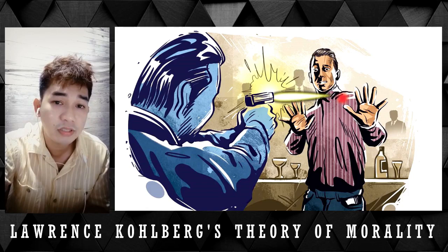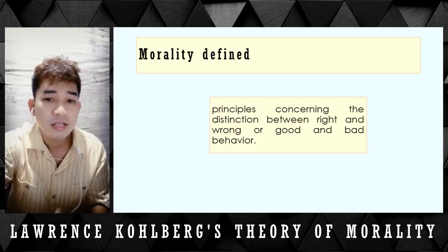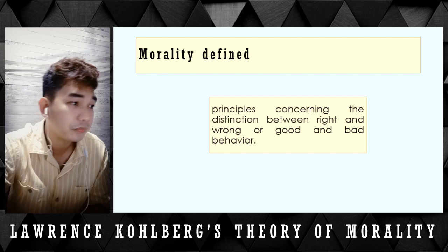For example, killing a person — that is a heinous crime, right? And of course, almost all of us agree that that is not the right thing to do. So that is an example of a universal principle of what is right and what is wrong.